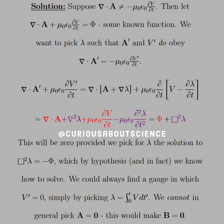Hence the statement and the way the statement was read, this will always be zero provided that we pick lambda the solution to the box squared lambda equals negative phi.